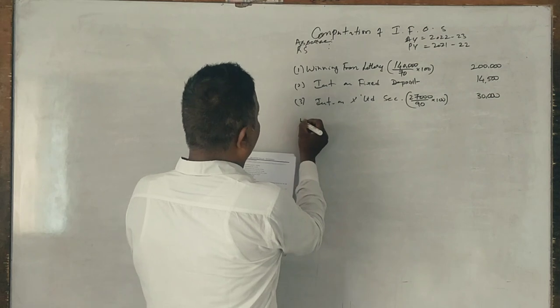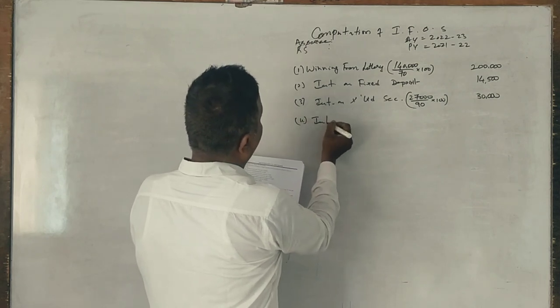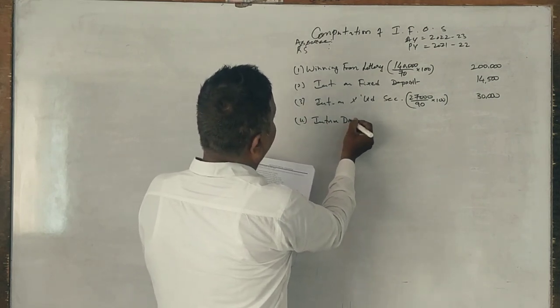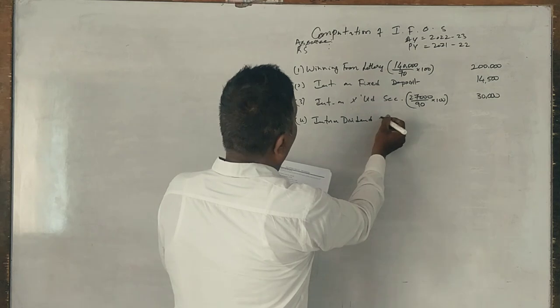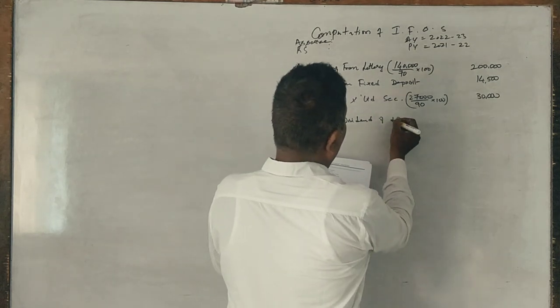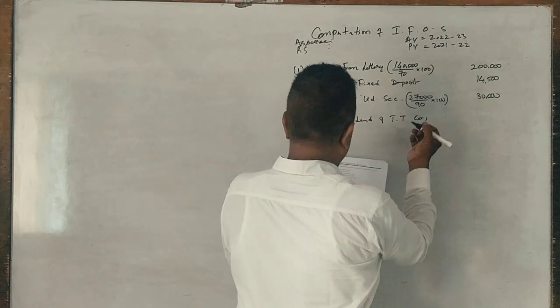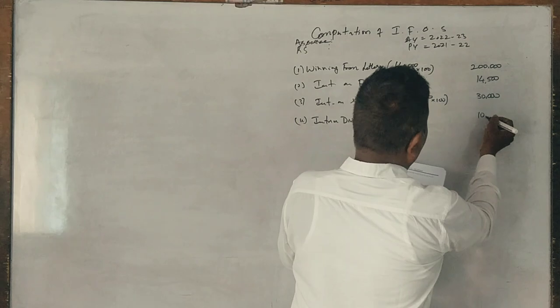Interim dividend fully taxable. Interim dividend of Tata Company, T-T Company: 10,000, fully taxable.